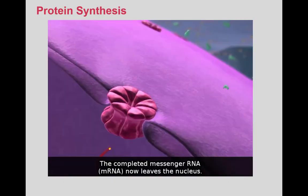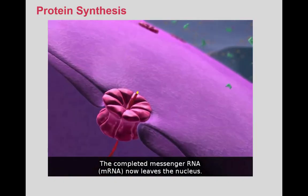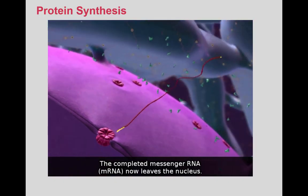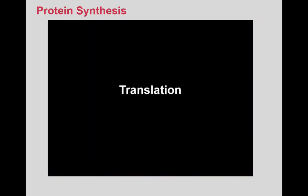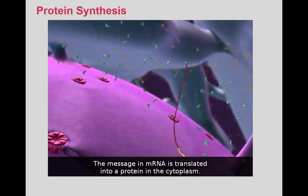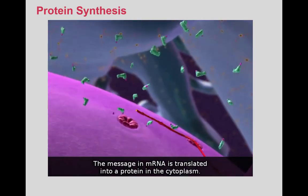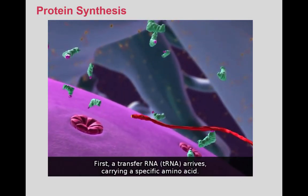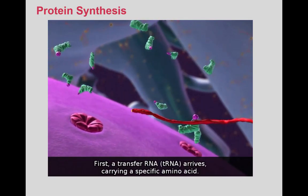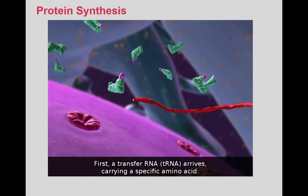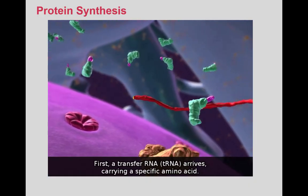The completed messenger RNA, mRNA, now leaves the nucleus. The message in mRNA is translated into a protein in the cytoplasm. First, a transfer RNA, tRNA, arrives, carrying a specific amino acid.